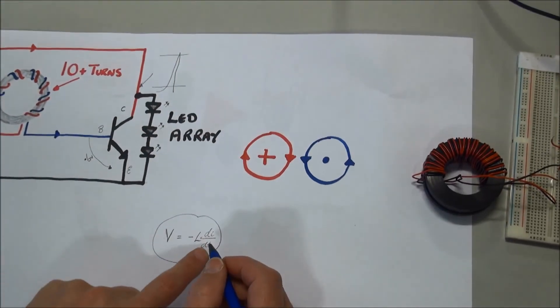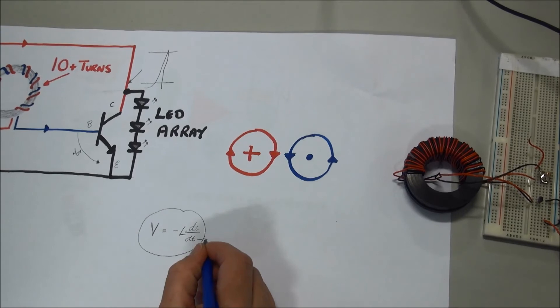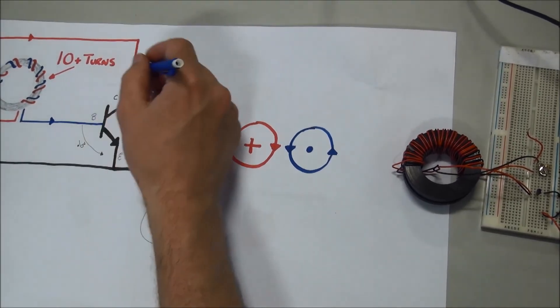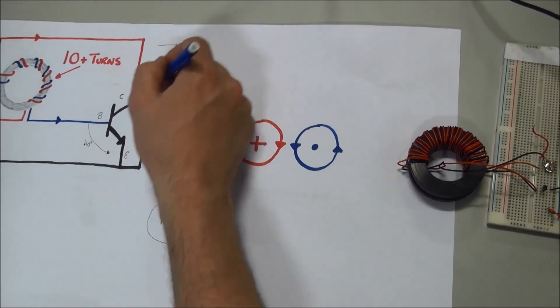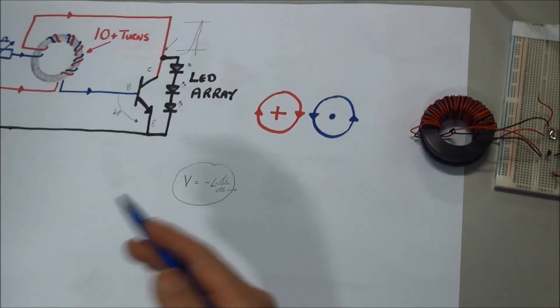The change in current and the change in time... the change in time is usually very small, the change in current is usually relatively large. So we can get a nice big voltage spike there, and that's basically how it works. That's how you're able to light so many LEDs from a 1.5 volt battery.